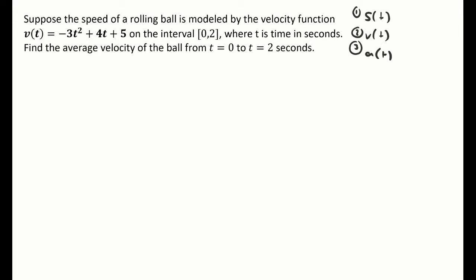The question says: suppose the speed of a rolling ball is modeled by the velocity function v(t) = -3t² + 4t + 5 on the interval 0 to 2, where t is in seconds. Find the average velocity of the ball from t = 0 to t = 2 seconds. This is an average value question — we know that average value uses the integral formula.